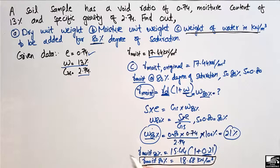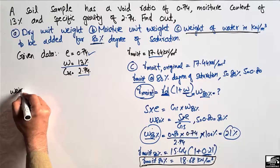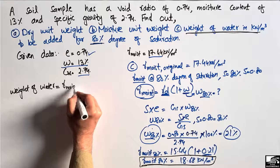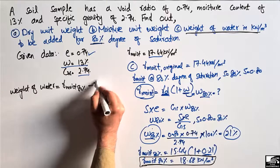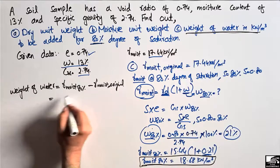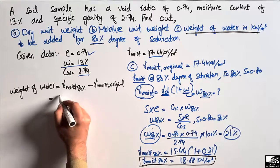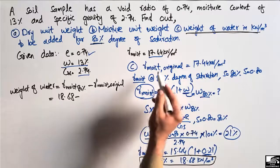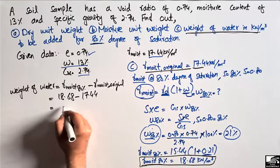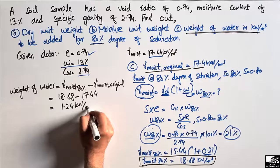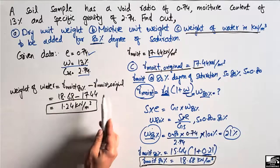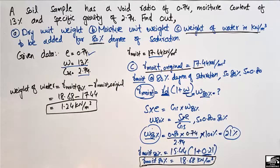We can now find how much weight of water needs to be added. Weight of water to be added = γmoist (80%) − γmoist (original) = 18.68 − 17.44 = 1.24 kN per cubic meter. This is the weight of water that must be added to the soil sample to achieve 80% degree of saturation.